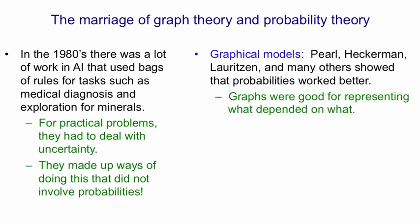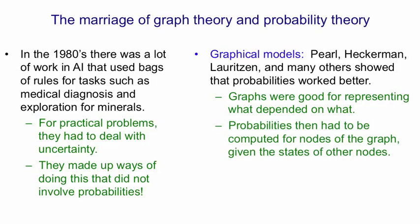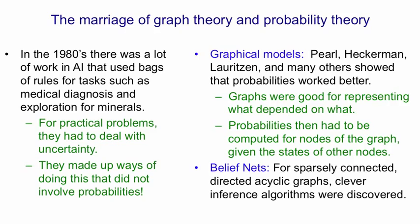Discrete graphs were good for representing what variable depended on what other variables. But once you had those graphs, you then needed to do real-valued computations that respected the rules of probability, so that you could compute the expected values of some nodes in the graph given the observed states of other nodes. Belief nets is the name that people in graphical models give to a particular subset of graphs, which are directed acyclic graphs, and typically they use sparsely connected ones. If those graphs are sparsely connected, they have clever inference algorithms that can compute the probabilities of unobserved nodes efficiently. But these clever algorithms are exponential in the number of nodes that influence each node, so they won't work for densely connected nets.